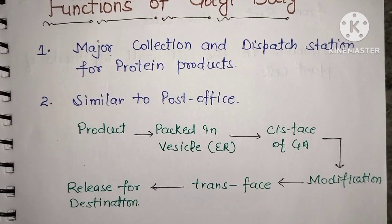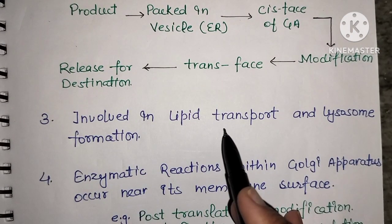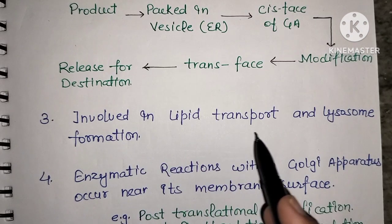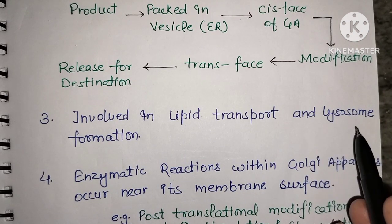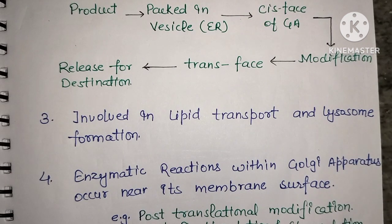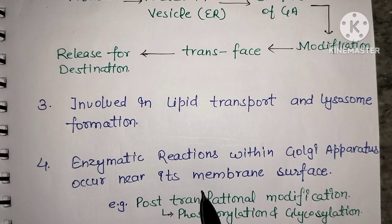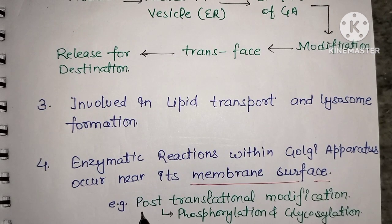The third function is involvement in lipid transport and lysosome formation. Proteins destined for lysosomes are modified by the Golgi apparatus. Enzymatic reactions also occur on the membrane surface, such as post-translational modifications.